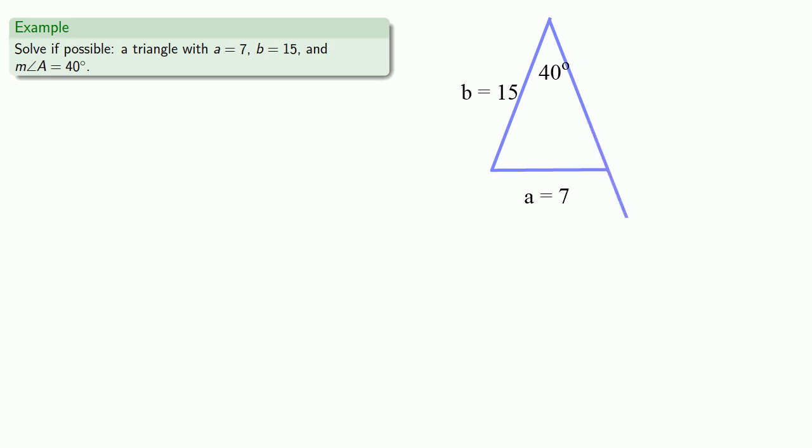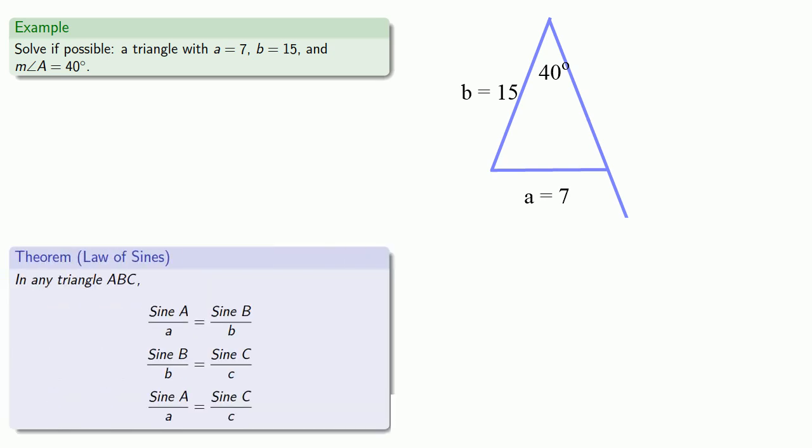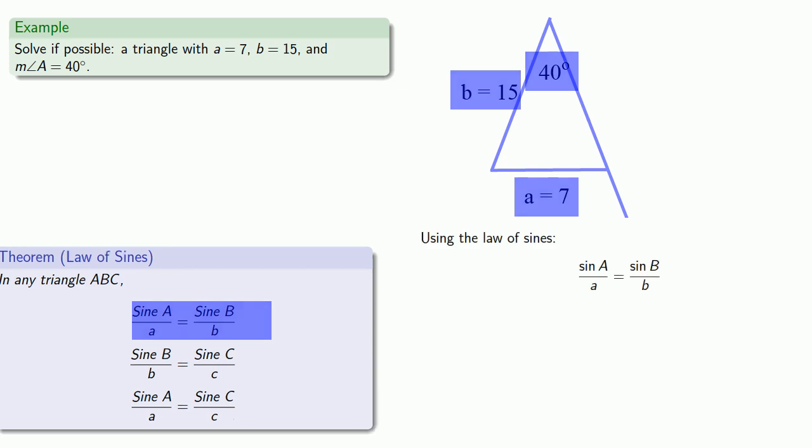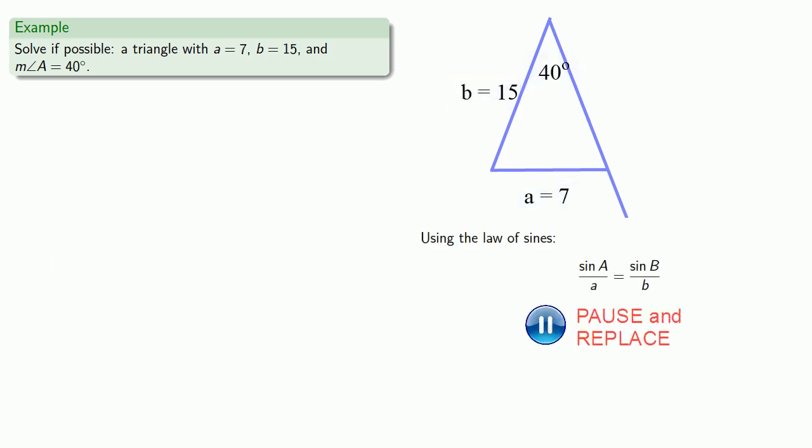We have two sides and an angle. So, we can choose one of the formulas in the Law of Sines. And since we have the sides A and B and the angle A, we'll choose this version of the formula, substituting in our values. And we can try to solve for B.